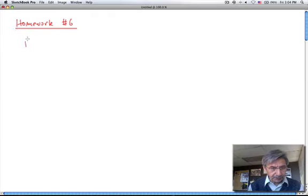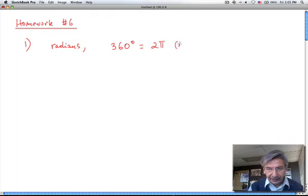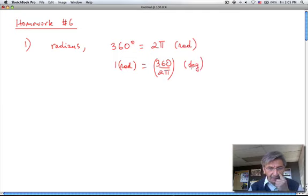This is homework number six. The first question is about changing units. In circular motion we measure angles in radians, and I remind you that a full circle, 360 degrees, is 2π radians. Therefore, one radian is 360 divided by 2π and you get the answer in degrees. The other way around, if you have degrees you need to transform into radians.